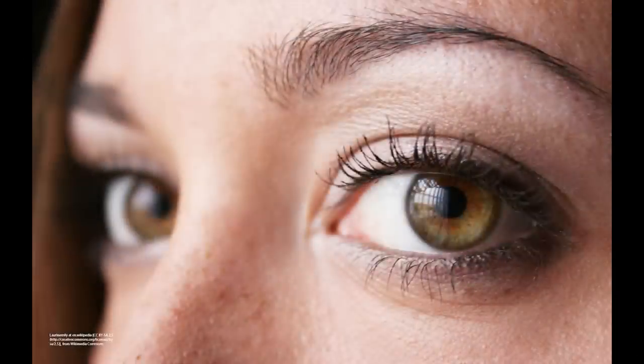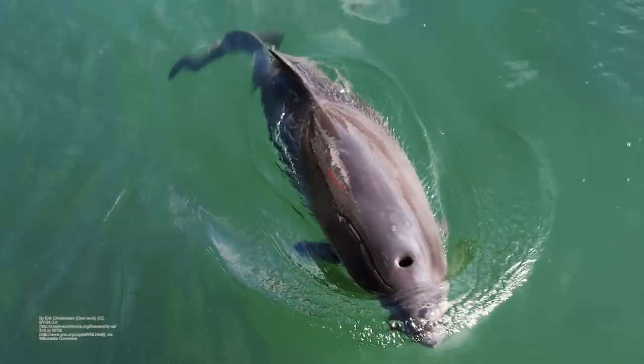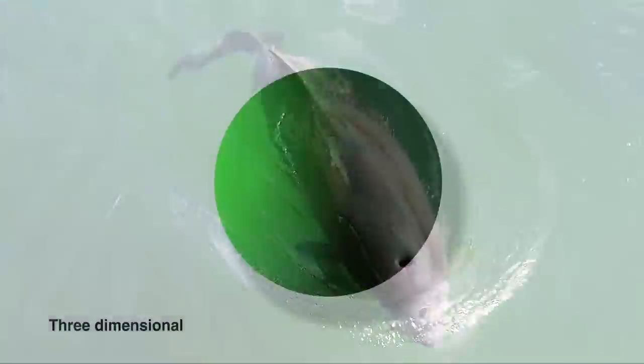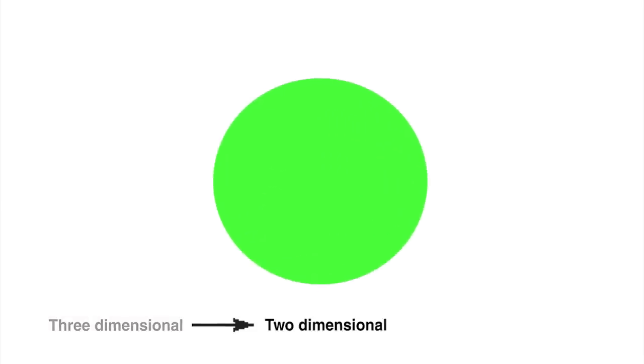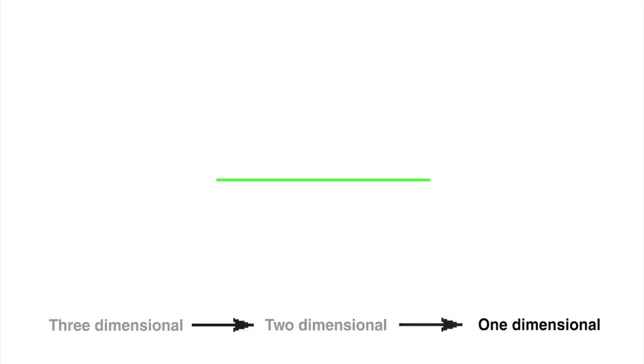Biological sonar produces a very different view on the world from vision. For instance, what the porpoise senses with its biological sonar is probably not how humans see in three dimensions, but rather more like a one- or two-dimensional representation of the world.